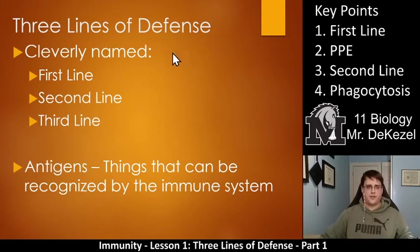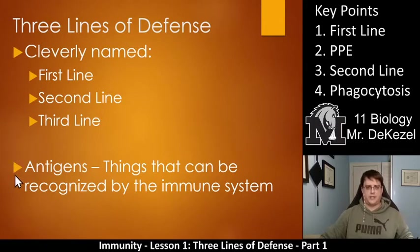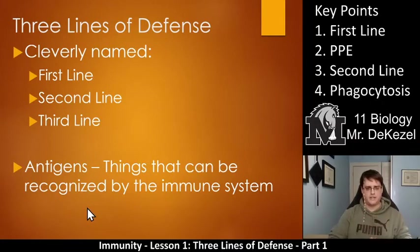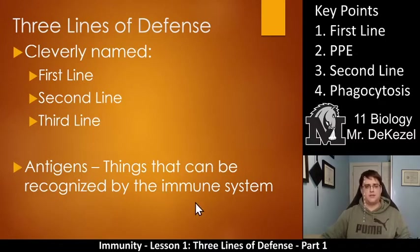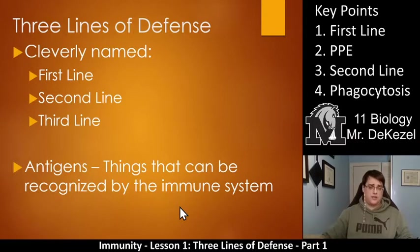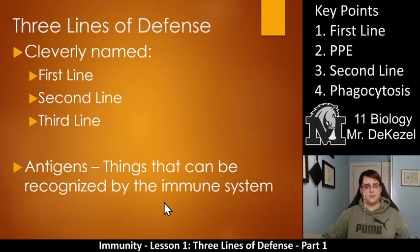The three lines of defense are very cleverly named: the first line, the second line, and the third line — that's how I'll be referring to them. One thing to define before we start: previously we talked about antigens as markers on red blood cells, and they are antigens. But overall, antigens are things that can be recognized by the immune system. Antibodies, which are part of our immune system, recognize them. Antigens will now refer to foreign invaders — bacteria, viruses, things that shouldn't be in your bloodstream.